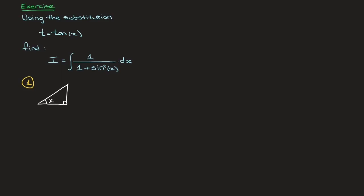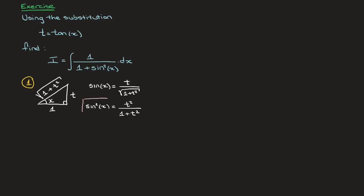The easiest way to do that is to let the side opposite x equal t and the side adjacent to x equal 1. Then tan of x equals t over 1, which equals t — exactly what we want. Using Pythagoras's theorem, the hypotenuse equals the square root of 1 plus t squared. From this triangle, sin of x equals opposite over hypotenuse, which is t over the square root of 1 plus t squared. Squaring that, sin squared of x equals t squared over 1 plus t squared.